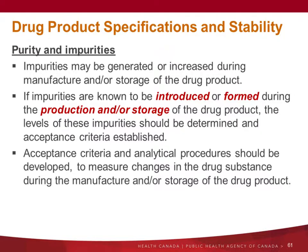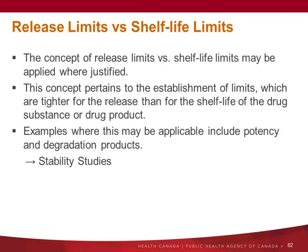The specs should account for stability and degradation over time. The level of impurities may increase during manufacture or storage. If impurities are known to be introduced or formed during production and storage of the drug product but not the drug substance, the level of these impurities should be determined and acceptance criteria established at the drug product stage. Acceptance criteria and test methods should be developed to measure changes in the drug substance during manufacture and/or storage of the drug product. You can set release or shelf life limits — the concept is that release limits are normally tighter than shelf life limits to account for degradation over time.